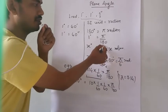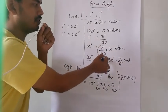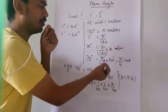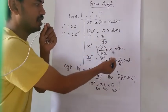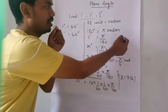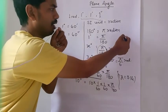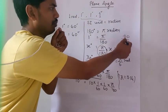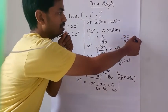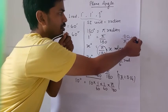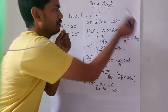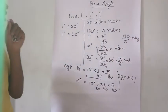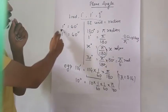If you have to convert radian to degree, then you have to reverse this multiplication factor. That is, to convert from radian to degree, you multiply by 180 by pi, and it will give you the answer in degree.